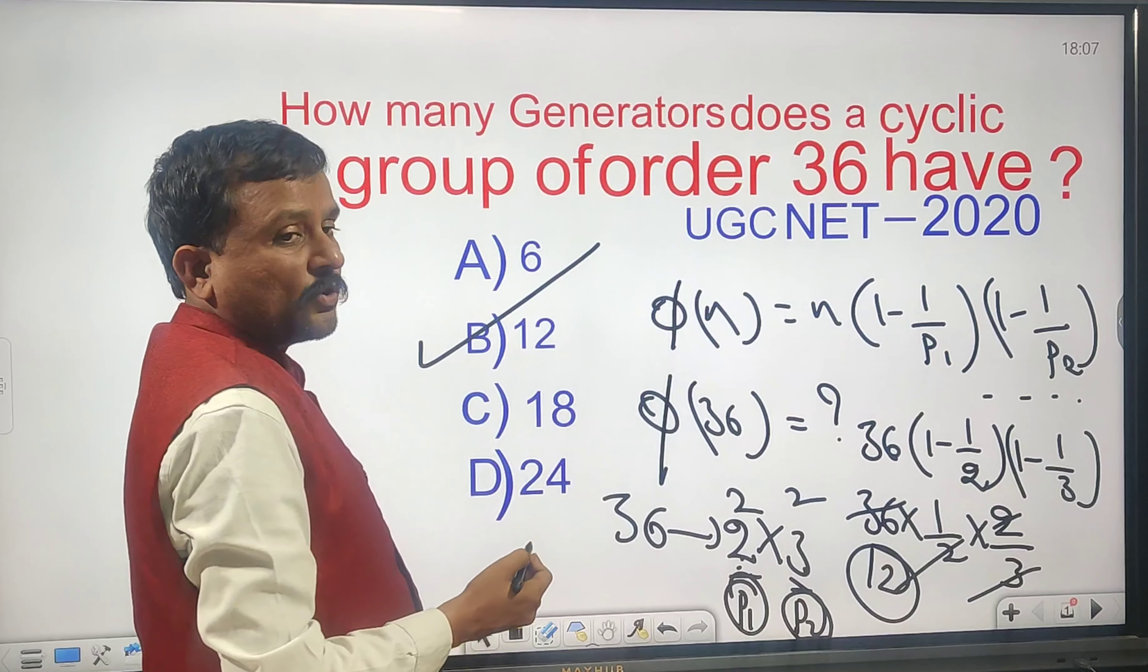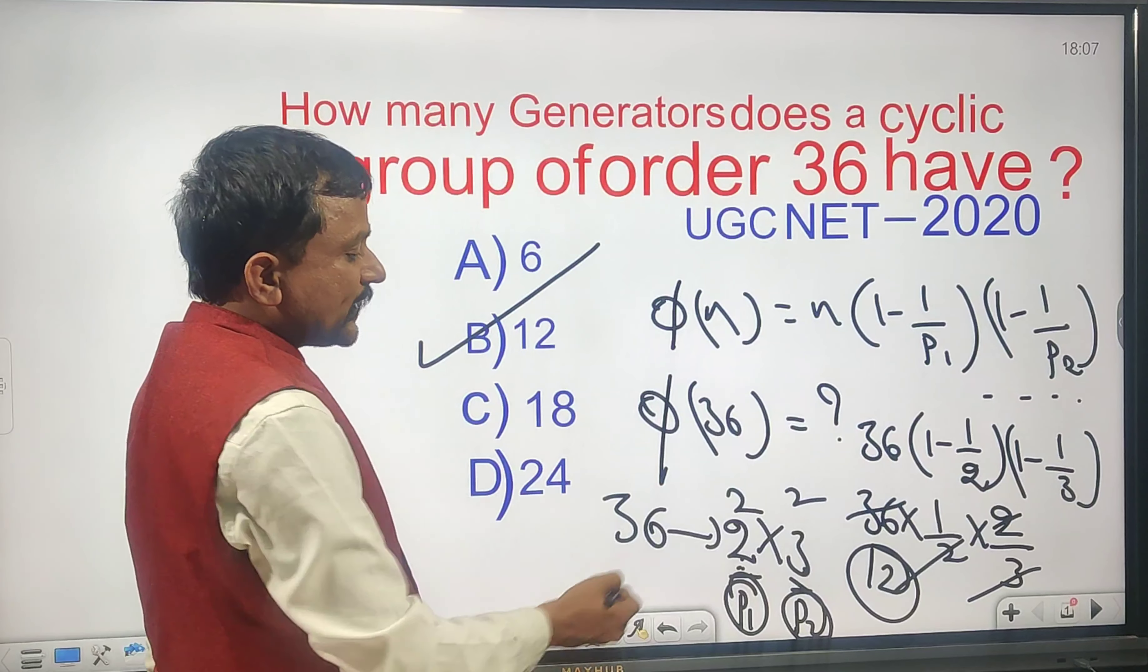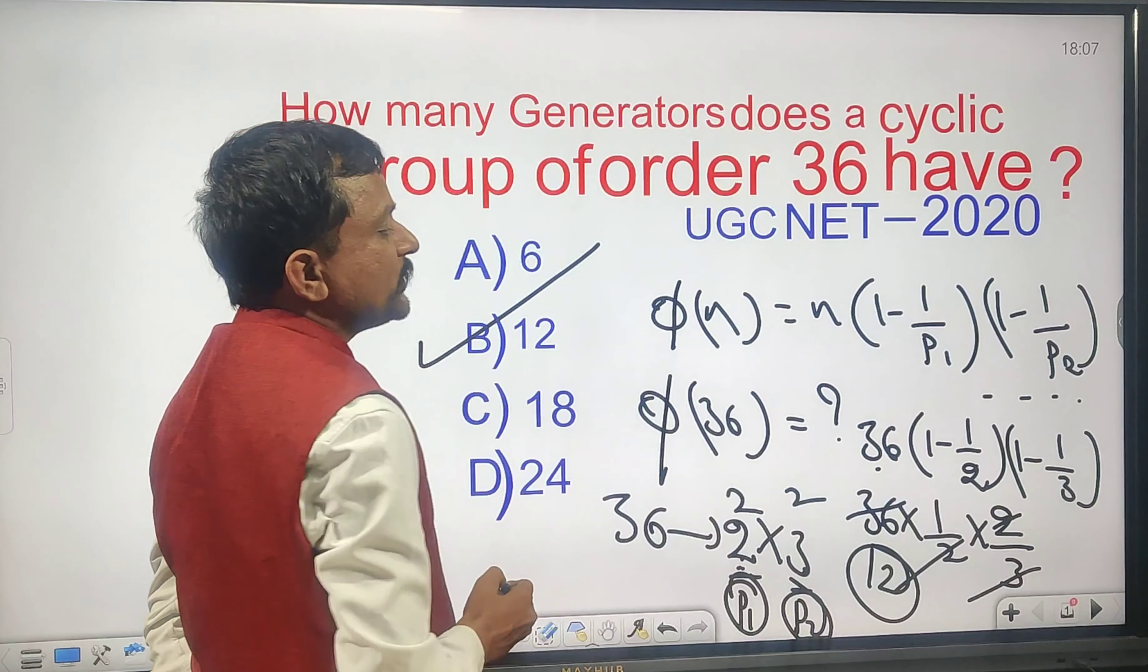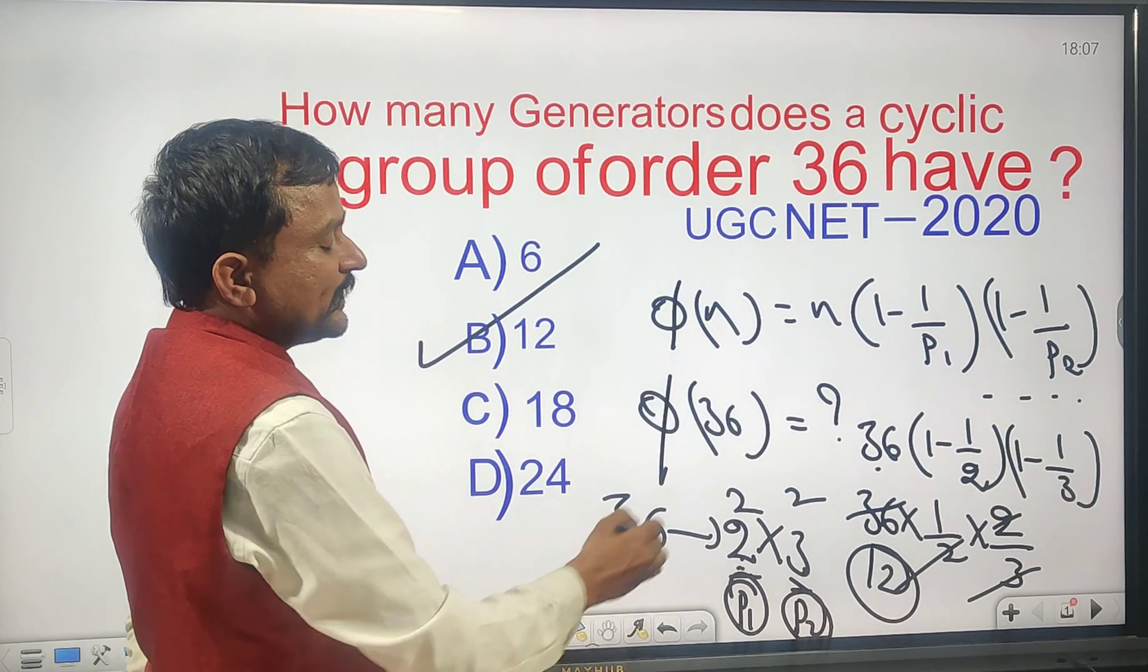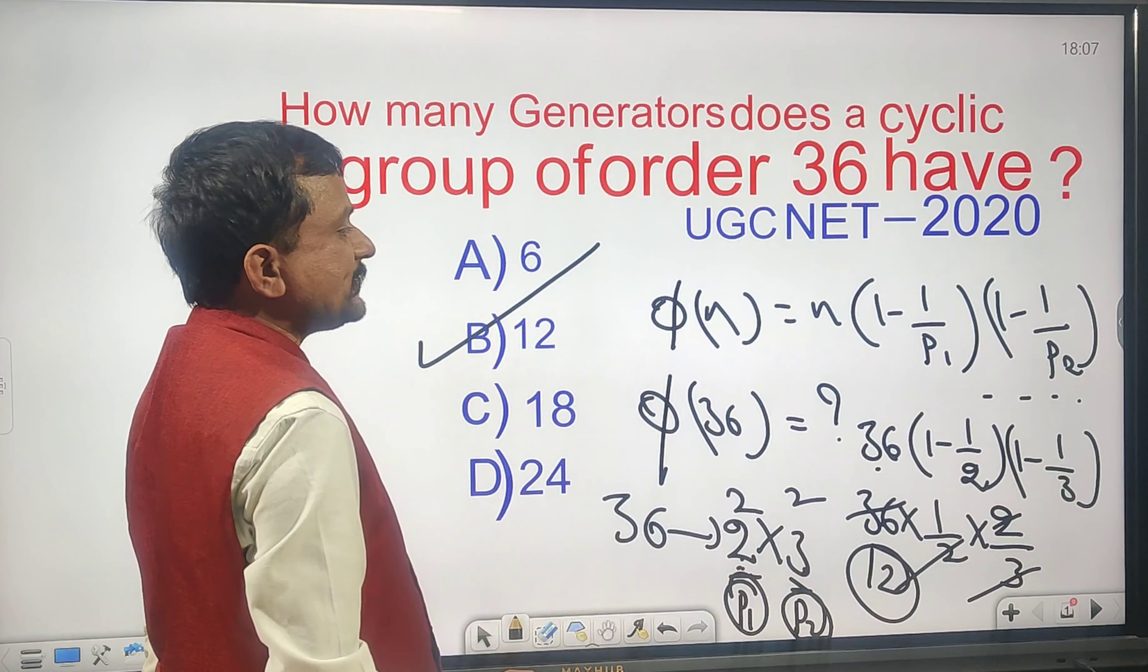Based on the prime factors, φ(36) equals 36 times (1 minus 1/2) times (1 minus 1/3), which is 36 times 1/2 times 2/3. Very clearly, the answer is 12.